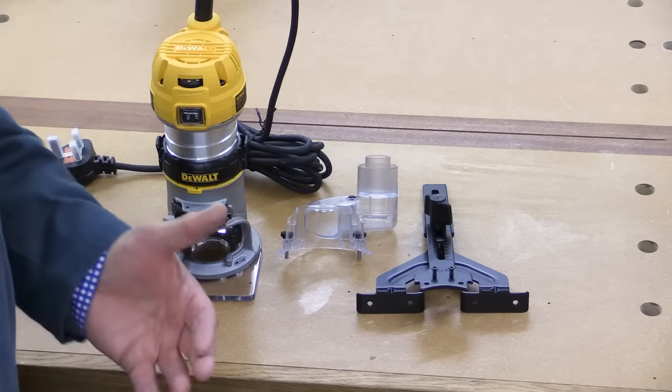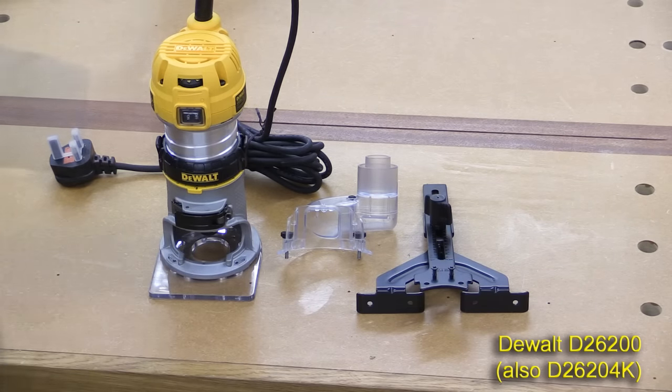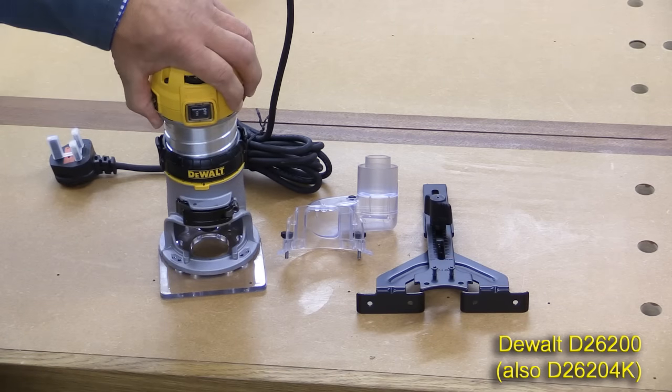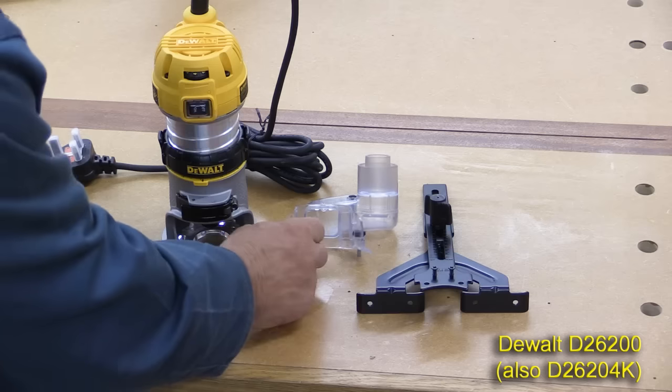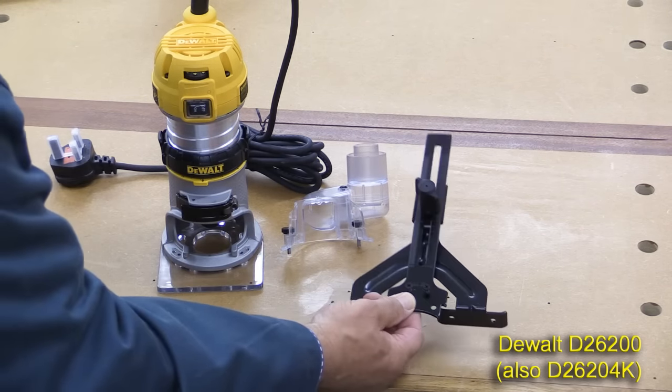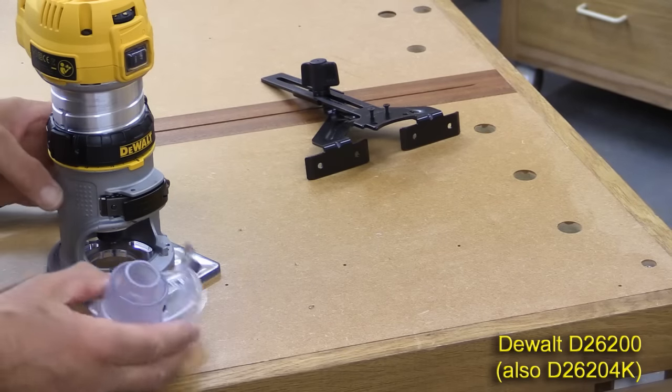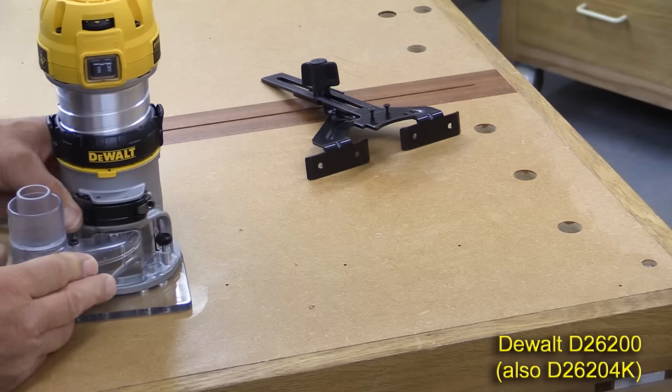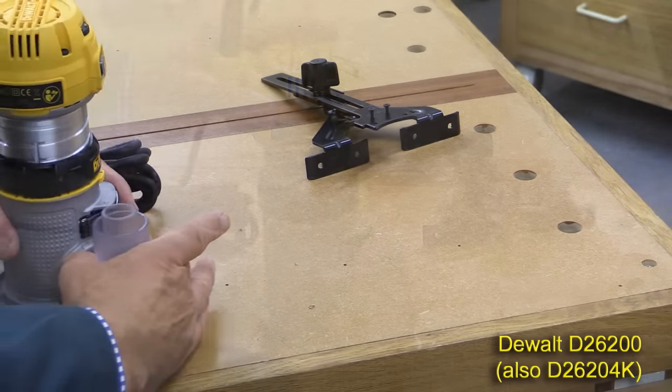I can show you exactly what you would get if you buy the 26200. It comes with the fixed base. It's exactly the same power unit as the other kits have. It comes with a dust extraction port here, and also the basic fence. Fixing the dust port is very simple. It fits into this space here at the front. Once it's in position, there are two screws, one here and one on the opposite side here.